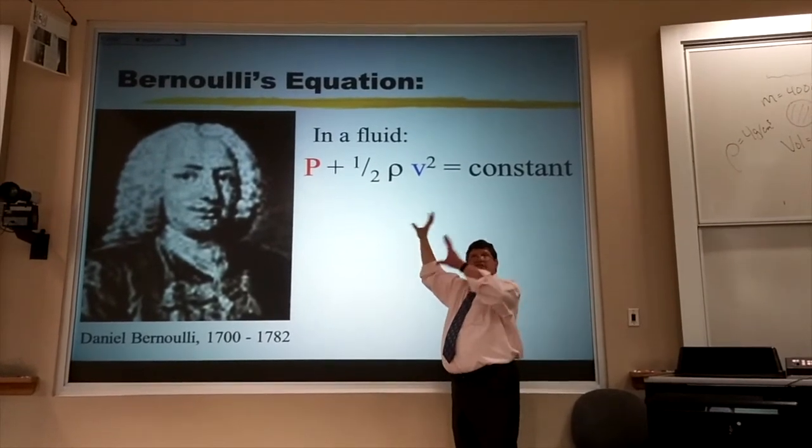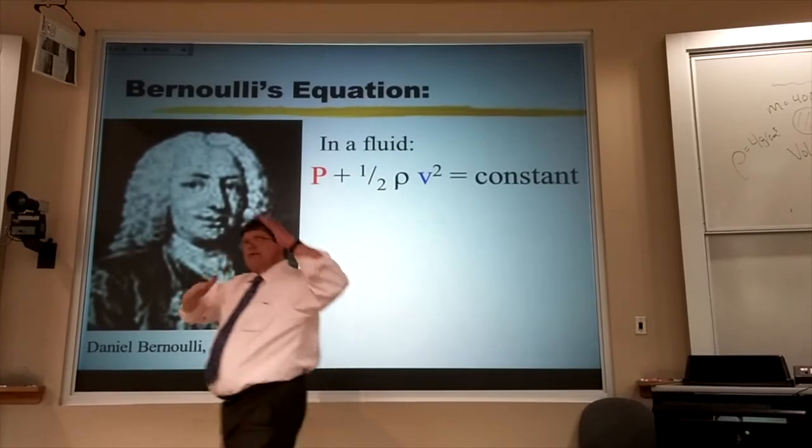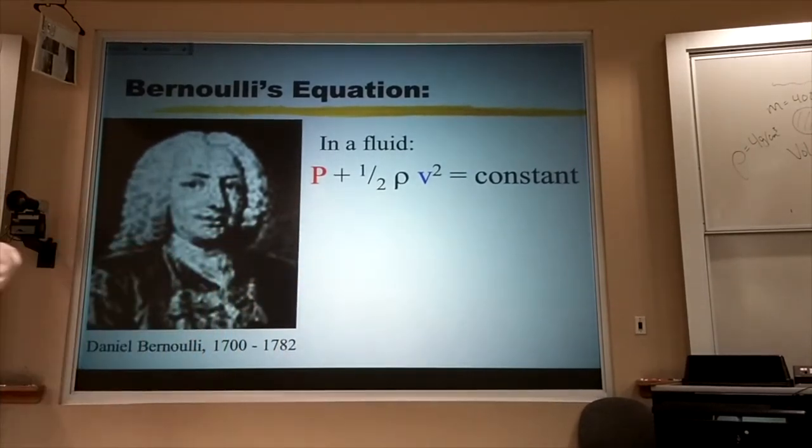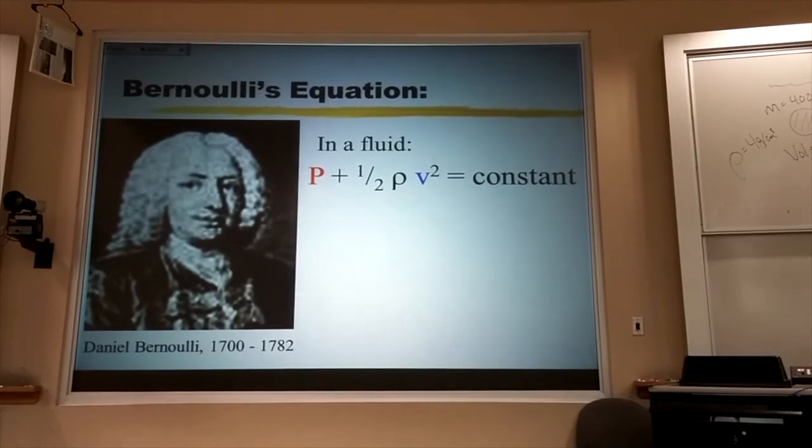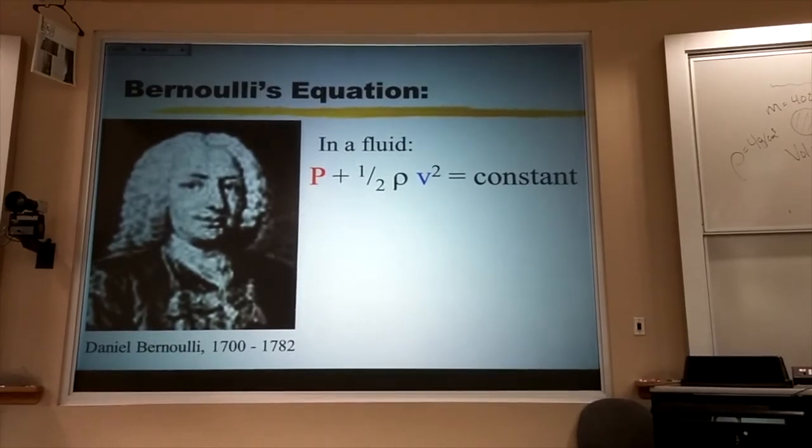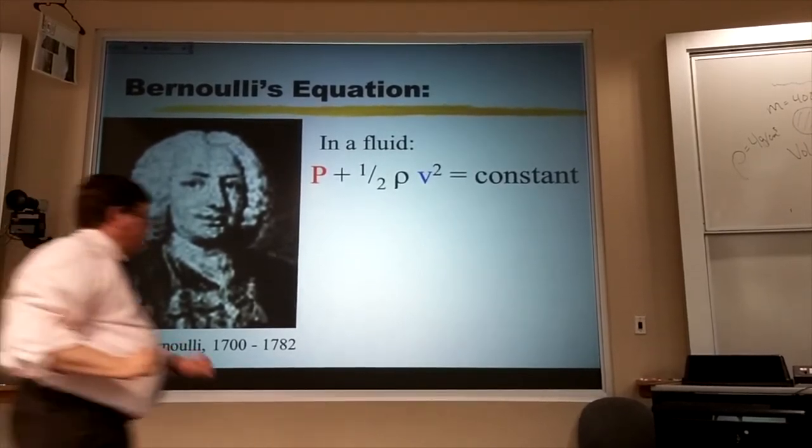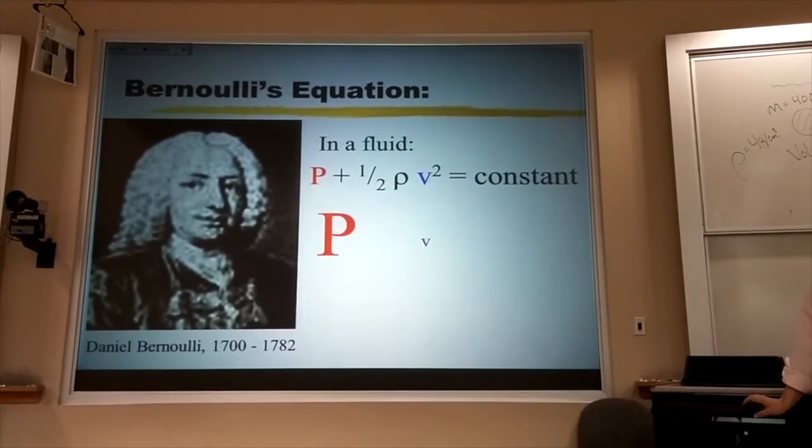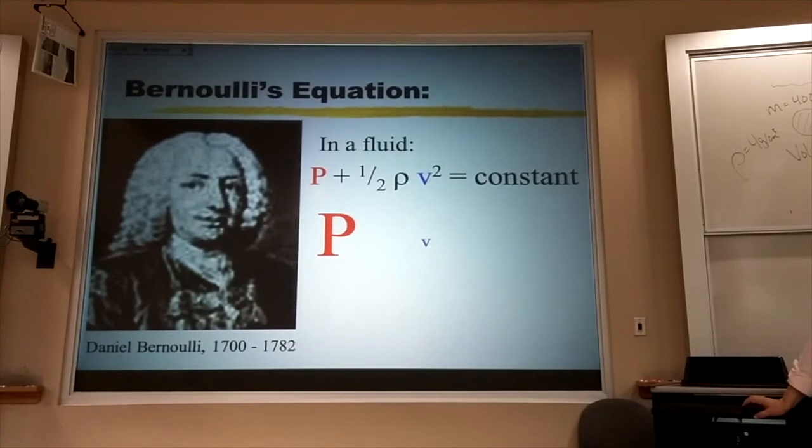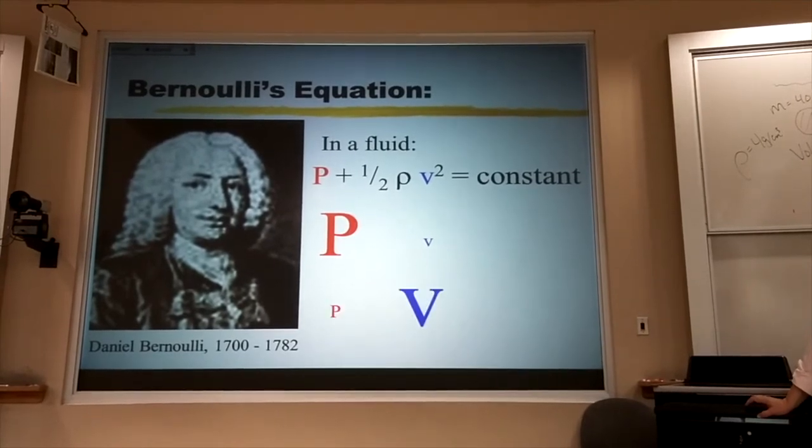Now, this is a simplified version of his equation, assuming that everything happens on the same level. If one part of the liquid is at a higher level, we need another term in here. But this is going to be all that we need here. What that means is that whenever I've got a high pressure, I have a low speed, and vice versa.